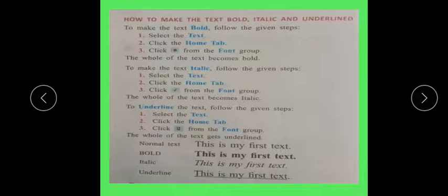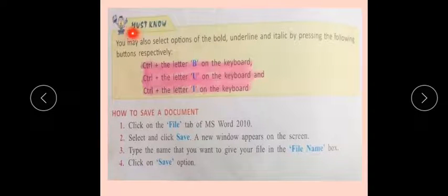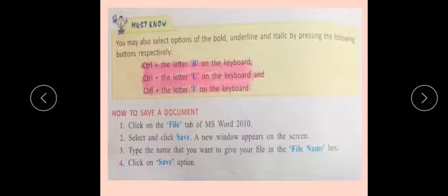To underline the text, follow the given steps: select the text, click the Home tab, and click Underline from the font group. The whole text gets underlined. You may also select bold, underline, and italic using keyboard shortcuts: Control+B for bold, Control+U for underline, and Control+I for italic. So your text can be made italic and underlined using the keyboard.